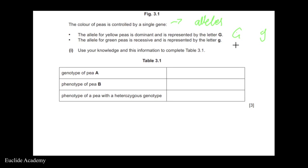This question tests whether you understand the difference between a dominant allele and a recessive allele. A dominant allele will always show itself — it always expresses itself in the phenotype, which is the physical characteristic of an organism, like eye color, hair color, or height. The allele for green peas is recessive, meaning it is not very expressive.